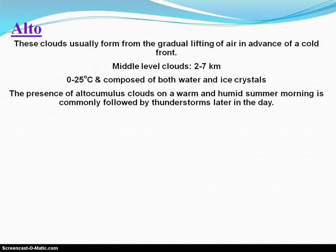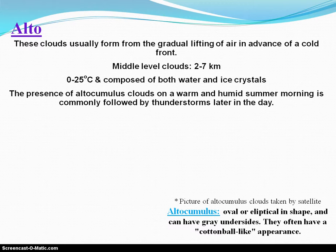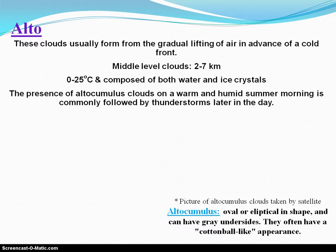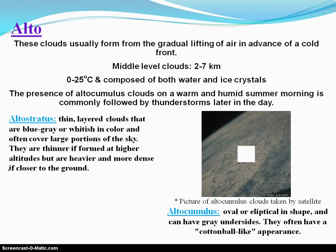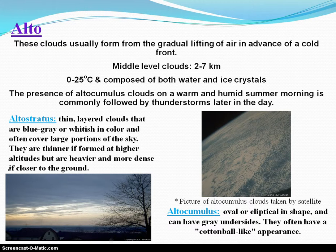Mid-level clouds — your alto clouds — are going to be more mid-range. If you have altocumulus clouds, these are going to be those puffy cotton-ball clouds at mid-range, and you're usually going to see them form on more humid summer mornings. They are a very good indicator that possibly later that same day you could have thunderstorms form. So if you see altocumulus clouds on a warm, humid summer morning, that would be a good indicator of possible thunderstorms later that day. You could also have altostratus — that thin blanket sheet of gray clouds at mid-range.